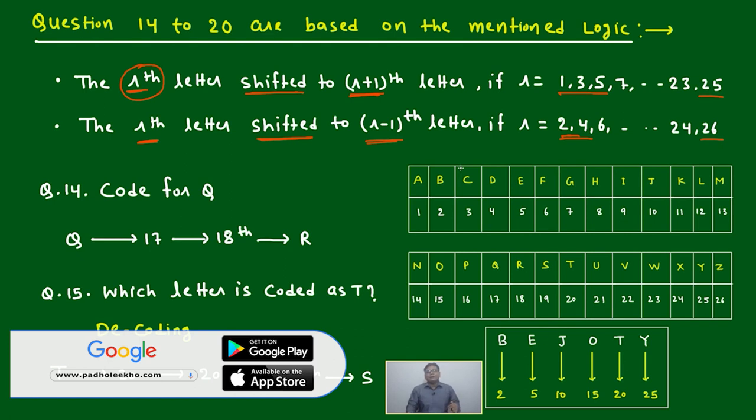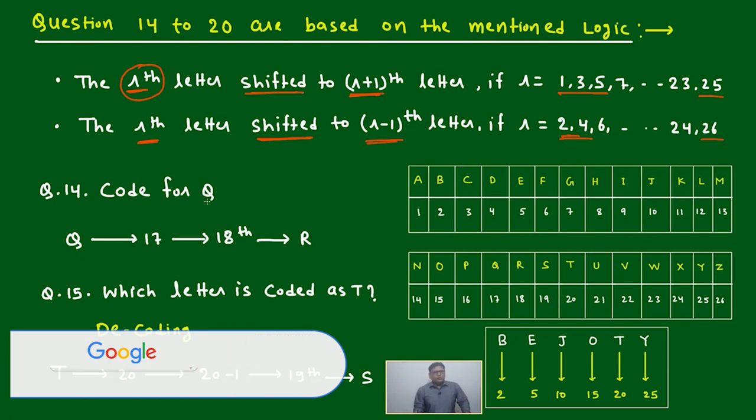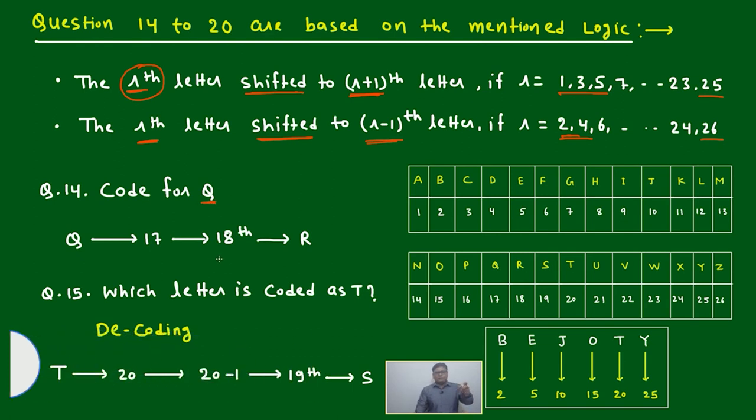Same way, just code for Q. We will start simple. If it is given Q, then first we have to check: Q is at 17. 17 is an odd number. Odd number means +1. 17 will change to 18. What represents 18th? 18 represents R. Means Q will change to R in this logic.